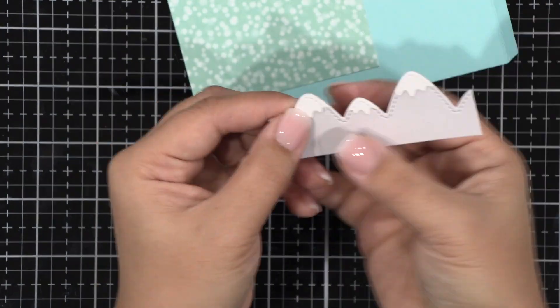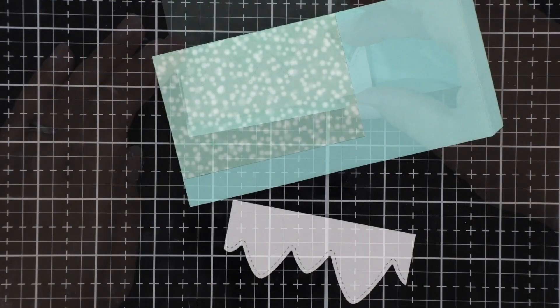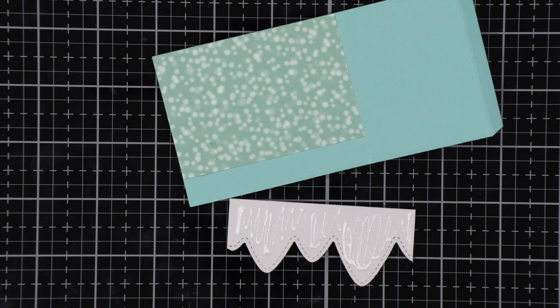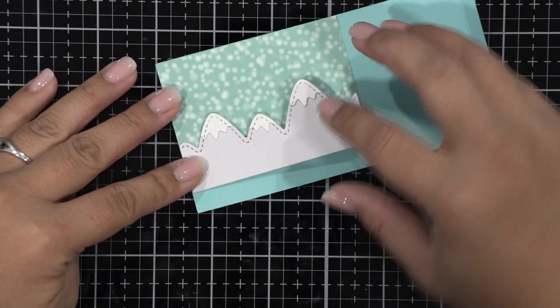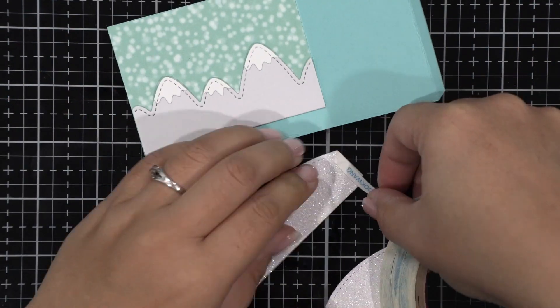Once that's done, after I've trimmed off the sides because I don't need the flaps, I'm going to go ahead and adhere that just over that background petite pattern paper that we added.